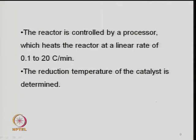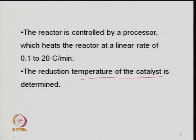The reactor is controlled by a processor with temperature and flow control. It heats the reactor at a linear rate of 0.1 to 20°C per minute, and the heating rate can be changed in the PID controller. Fast or slow heating rates are both important during reduction in a catalytic reactor system. The rate of heating is equally important for calcination and reduction because it is a chemical reaction — a reaction between solid particles, between metal and support, or between two metals.